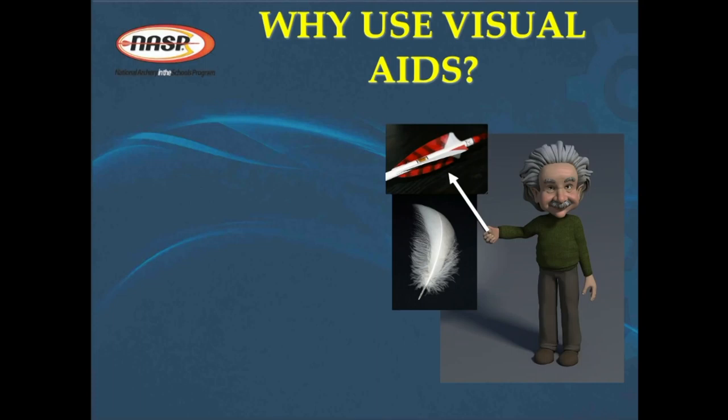Why use visual aids? When we're trying to sell the NASP program to a school principal, it would be a whole lot easier to do so if it didn't involve bows and real arrows. But of course, not using those kinds of visual aids in an archery class would be very boring to the students.